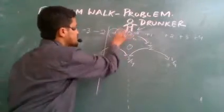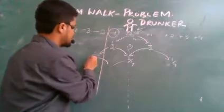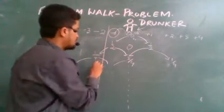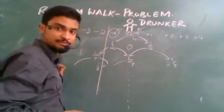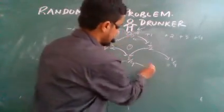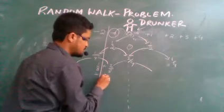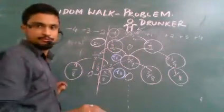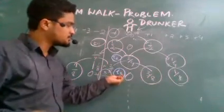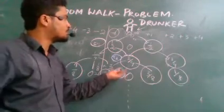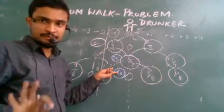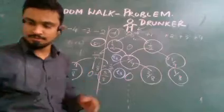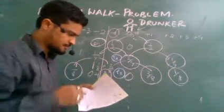At t=2, the probability of getting to minus one in the next step is: from minus two, it can go to minus three or minus one — so half of 1/4 = 1/8. From the zero position, it can go left or right — contributing 2/4 times 1/2 = 2/8, giving 3/8 total at minus one. In this way we get the probability distribution for the drunker. After t=3 (an odd number), the probability of being at the middle is zero — it cannot be in the middle at odd steps.